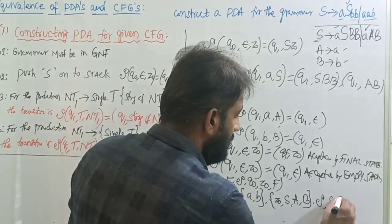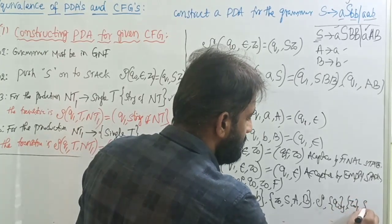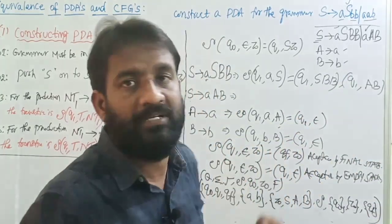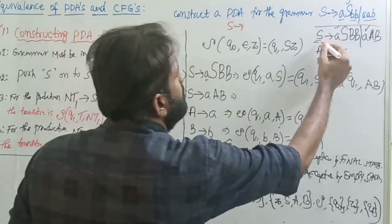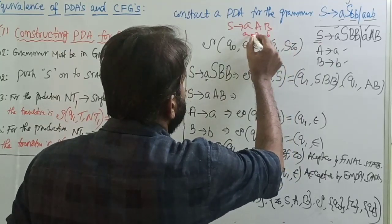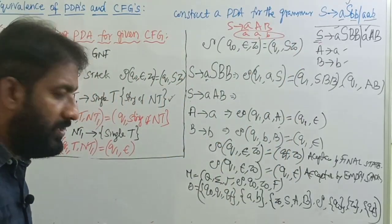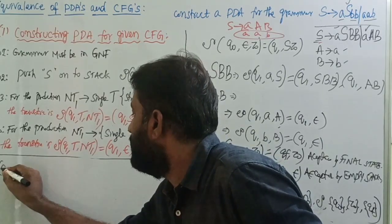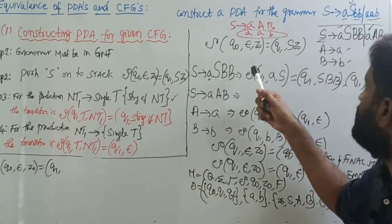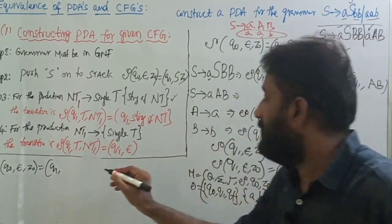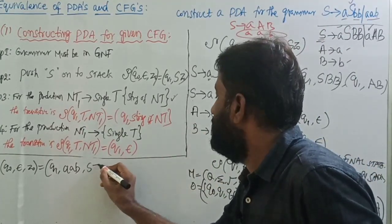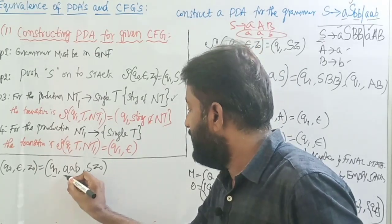Now take one string generated by this grammar — the same string should be accepted by this design; only then is it correct. S tends to — I'm taking this: a A B. Now A is replaced by small a, B is replaced by small b, so the string is 'aab'. Write the instantaneous description: δ(Q0, ε, Z₀) = (Q1, S Z₀). We first add S onto the top of the stack. Input string is 'aab', stack is S Z₀.